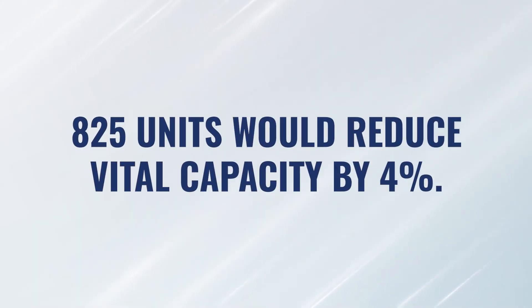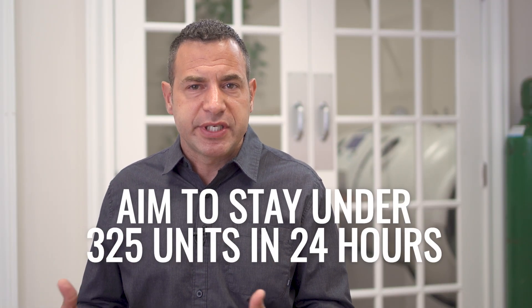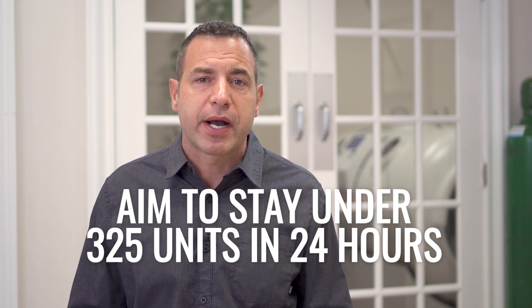825 units would reduce vital capacity by about 4%. In general, in most hyperbaric practice, we're trying not to exceed 325 units in a 24-hour period. There are cases where we're doing 2 atmospheres on 100% oxygen for two hours — that would be 240 units, which is still safe. What about 2.5 atmospheres for 90 minutes? And in some cases, you might even be doing double or triple sessions in a day — are you keeping your patients safe?